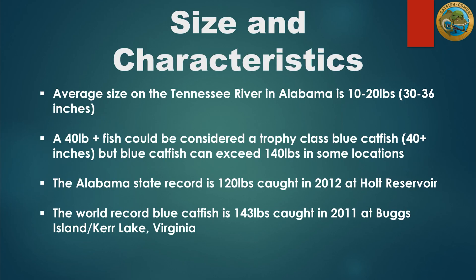The average blue catfish that I see on the Tennessee River is about 10 to 20 pounds, whereas a 40-plus pound fish could be considered by many people to be a trophy class fish. The current Alabama state record blue catfish is a whopping 120 pounds and was caught in 2012 at Holt Reservoir in central Alabama. The current world record blue catfish is 143 pounds — an absolutely massive catfish — and was caught in 2011 at Bugs Island, also called Kerr Lake, in Virginia.